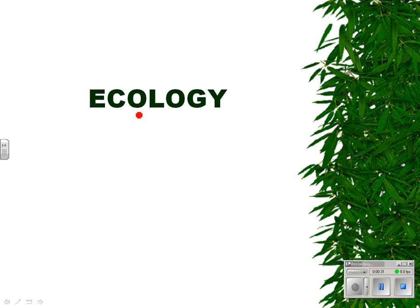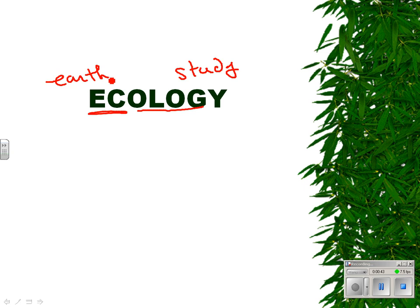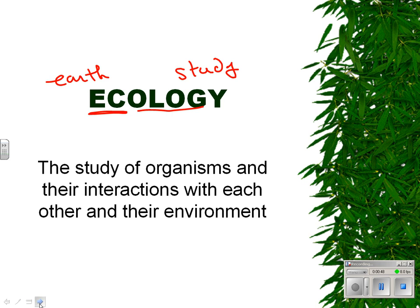Break down the word. '-Ology' means study of. 'Eco' means earth. Now that's kind of a generalized statement, so the real definition of ecology is the study of organisms, their interactions with each other, and their environment. Maybe we should eliminate the 'and' — the study of organisms, their interactions with each other and their environment.